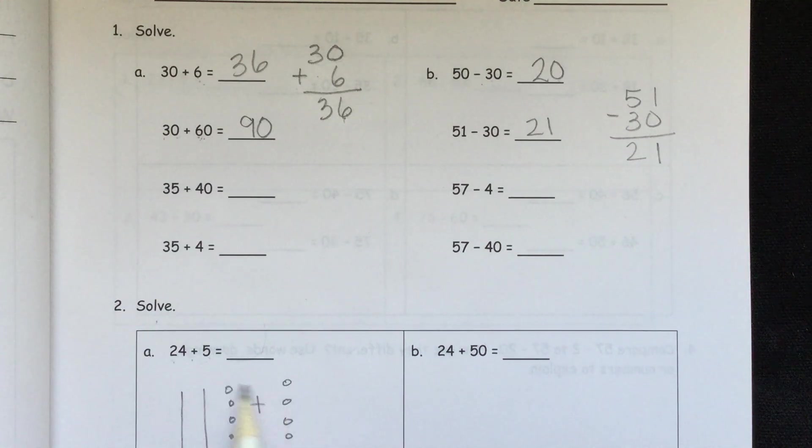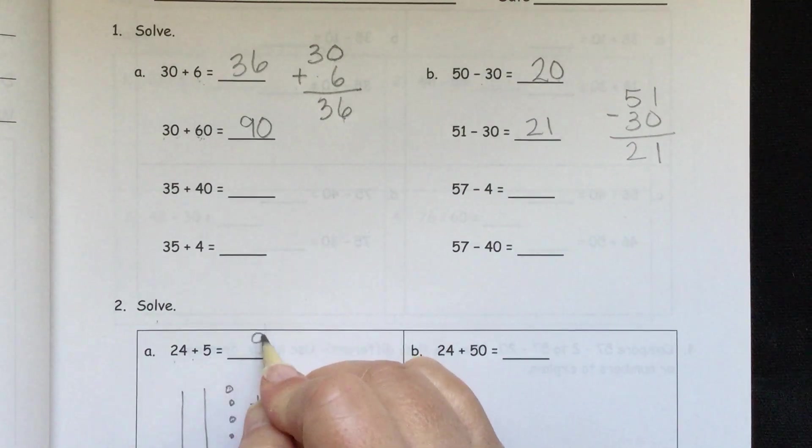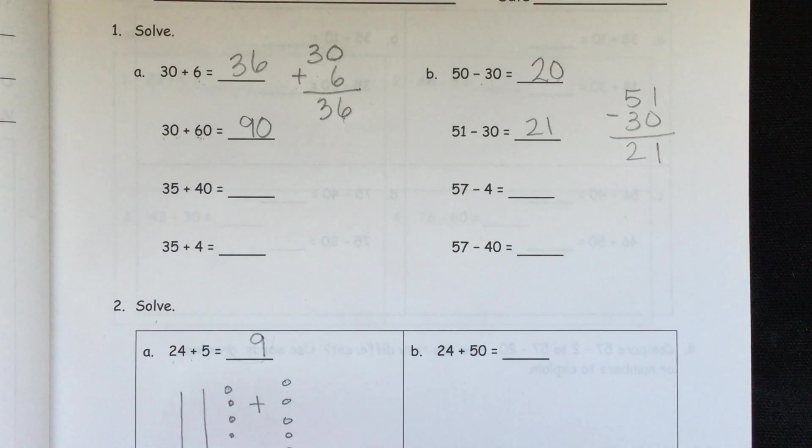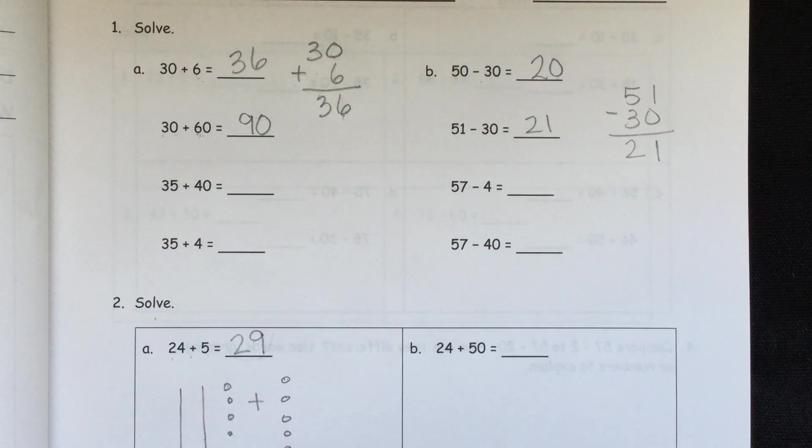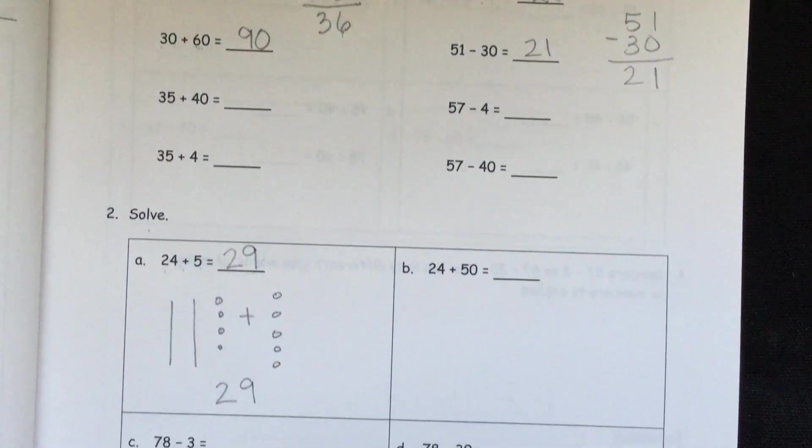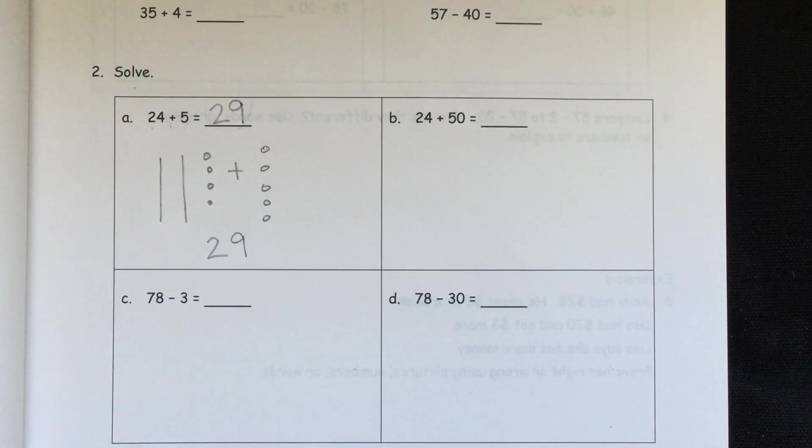So then we are adding. So we just need to count it all together. So we have 1, 2, 3, 4, 5, 6, 7, 8, 9. I'm going to write a 9 here. Or you could also write a 9 here. And then we have 2 10s. So that goes in our 10s space. We have 29. We also have subtraction here. So you can use your same methods like we did on the top part.